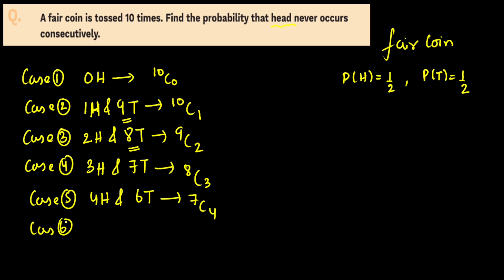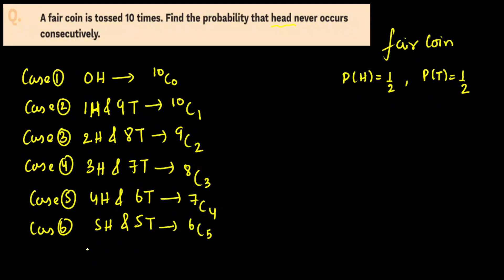Case 6: 5 heads and 5 tails. Now they are equal. 5 tails generate 6 gaps, and out of 6 gaps we need to select 5, which gives 6C5 = 6 ways only.